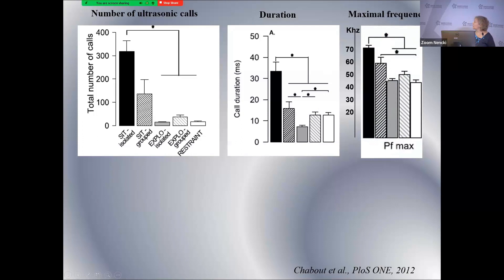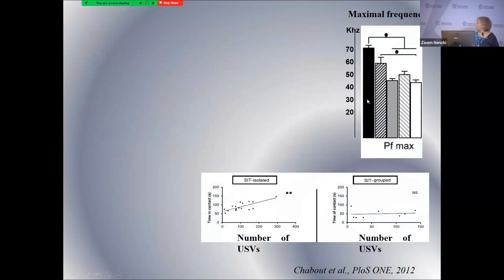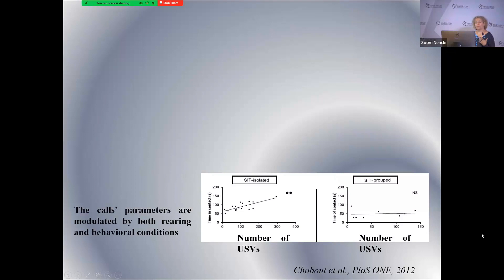What I found most interesting was that when animals were isolated before the social task, there is a linear positive correlation between the number of USVs emitted and the duration of contact — and we have observed this in all kinds of animals recorded so far. This is not the case when animals were not isolated beforehand, suggesting that the call parameters — number, frequency, and duration — are modulated both by the behavior animals are doing and by the way they were reared before the task.